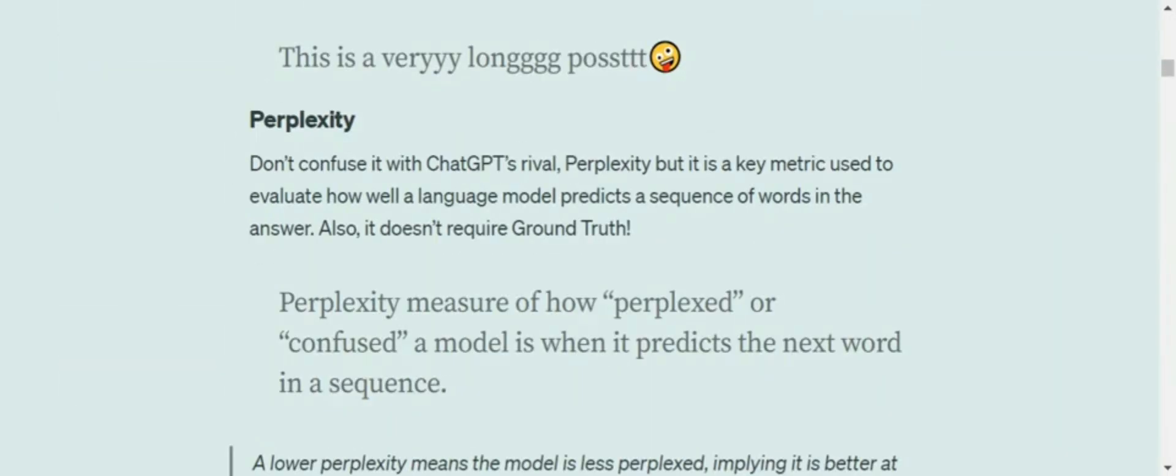Let's get started. Don't confuse this with Perplexity.ai, which is ChatGPT's rival. We're talking about perplexity the metric. This particular metric measures how perplexed or confused the model is when it predicts the next word in a sequence.